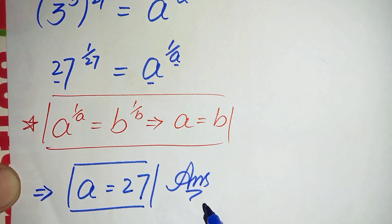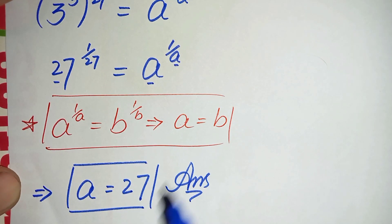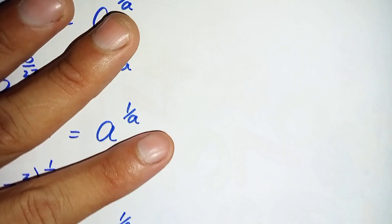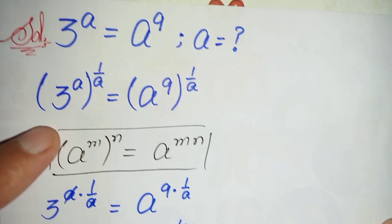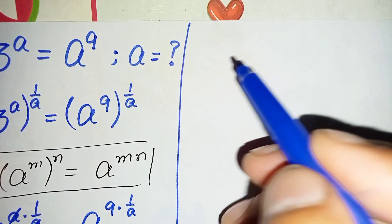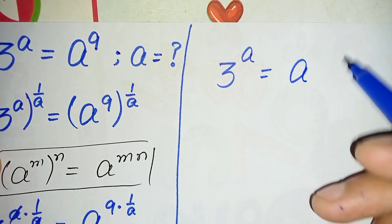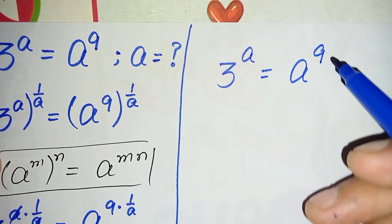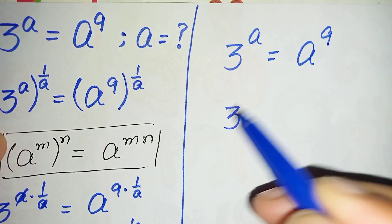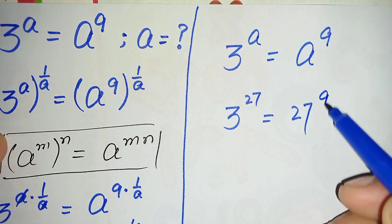So a is equal to 27 is our answer. Now we will try to verify that a equals 27 is the exact and correct value. To verify, we write the original exponential equation: 3 raised to power a is equal to a raised to power 9. We replace a with its value, 27. So this becomes 3 raised to power 27 is equal to 27 raised to power 9.